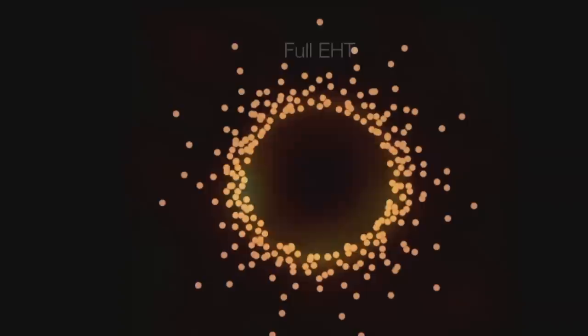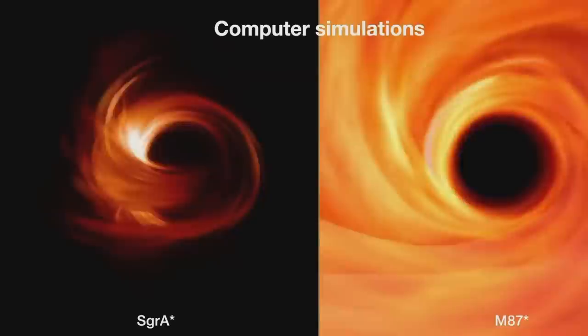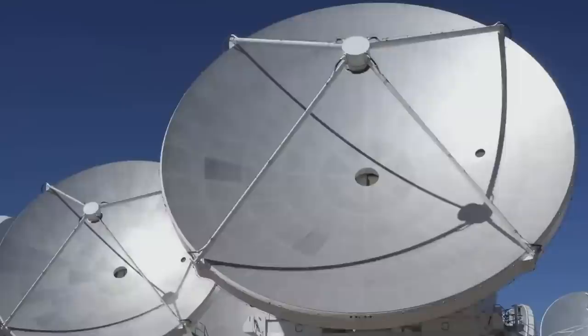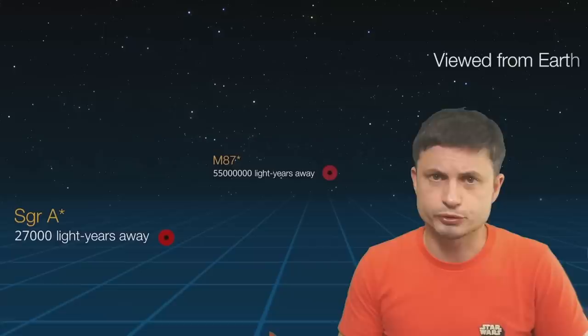Creating this image involved combining different points from different telescopes to create a full picture. The picture would look entirely different if certain telescopes were absent — the more telescopes, the higher the resolution. To create a working algorithm, scientists ran computer simulations on supercomputers to determine what they're most likely to see in this region. Essentially this was a combination of computer simulations with physical observations from eight radio telescopes.